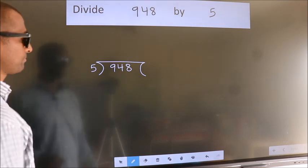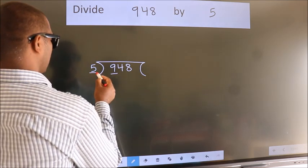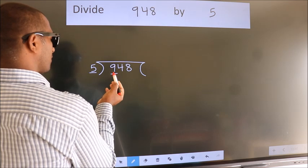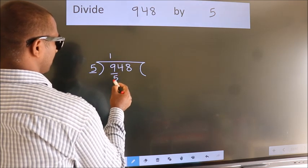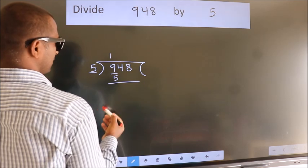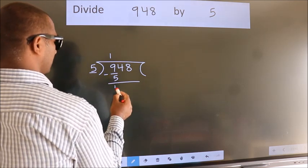Next, here we have 9, here 5. A number close to 9 in the 5 table is 5 once, which is 5. Now we should subtract. We get 4.